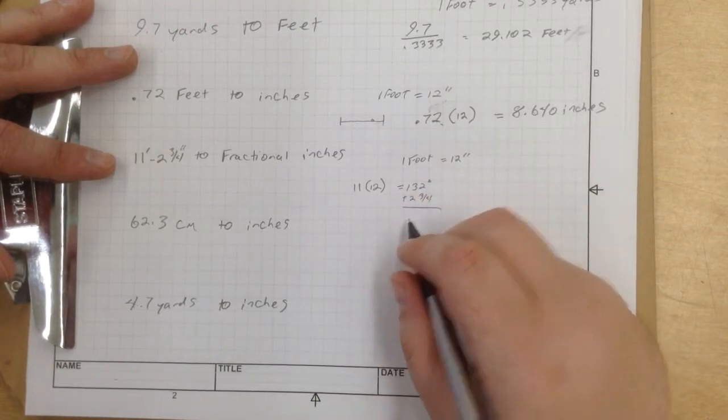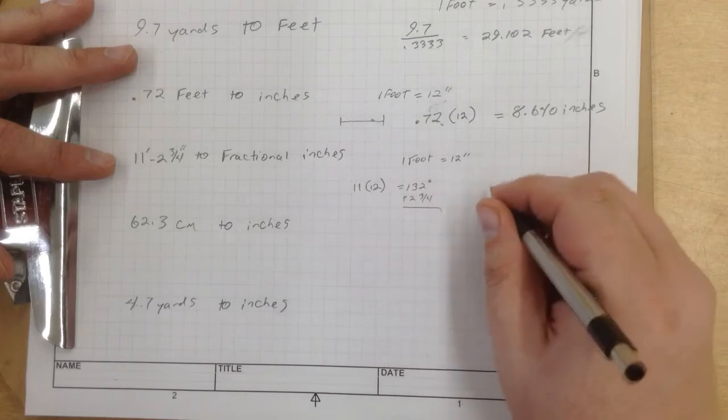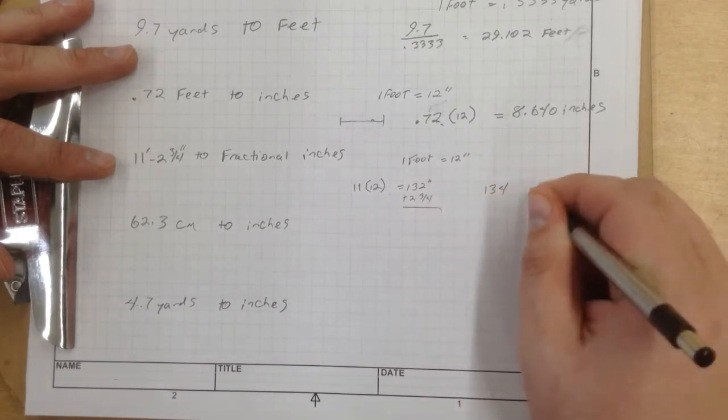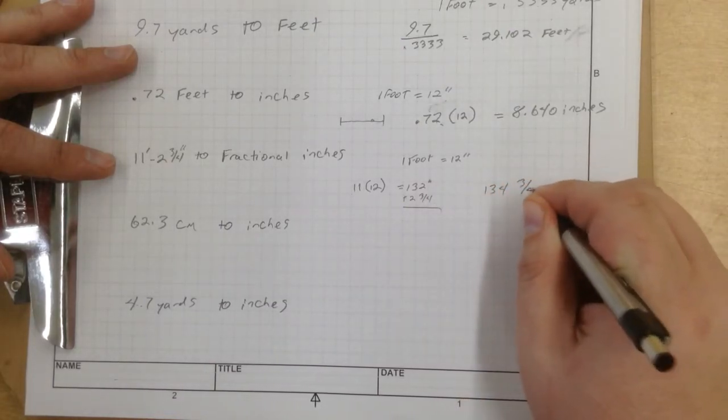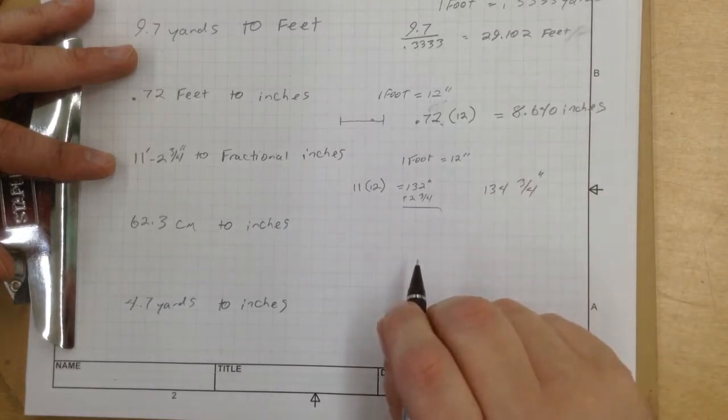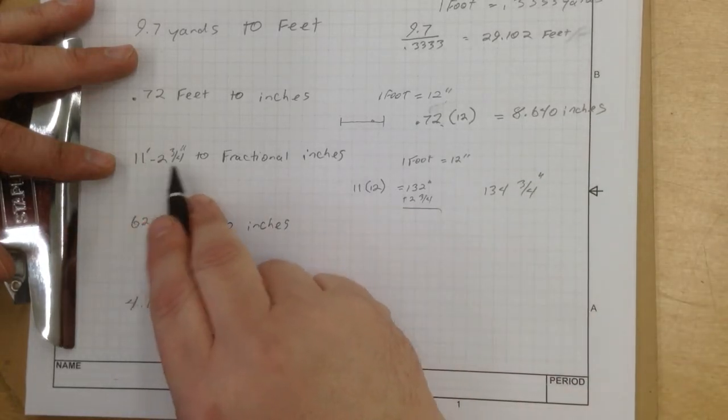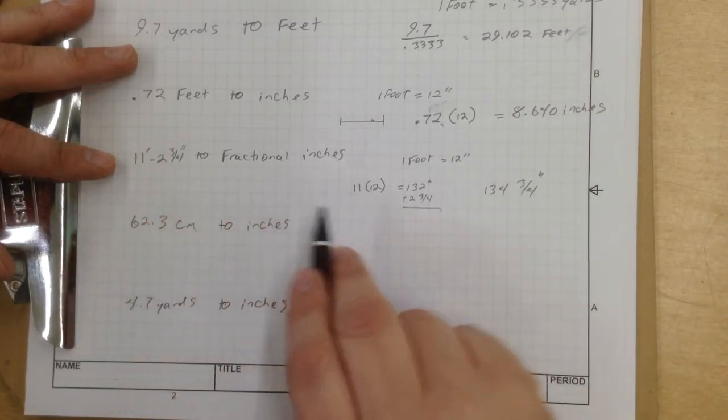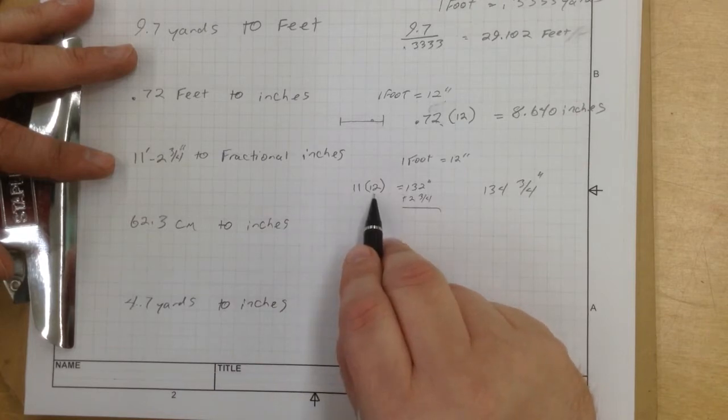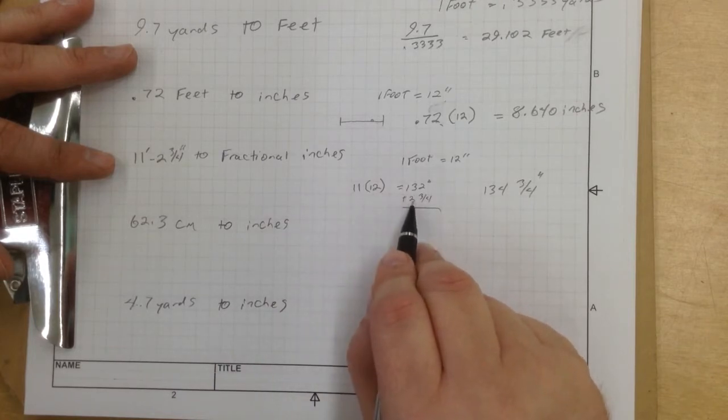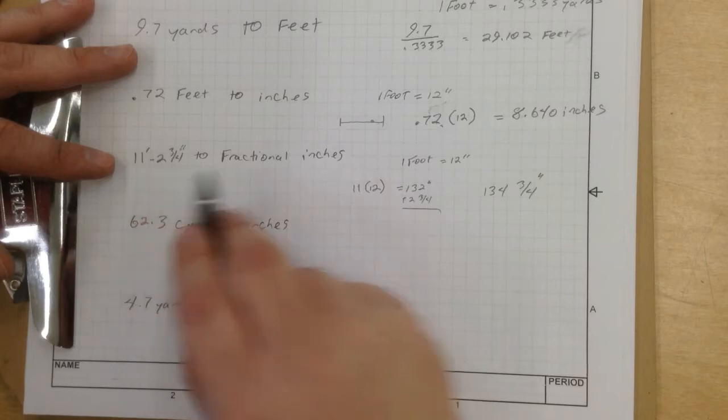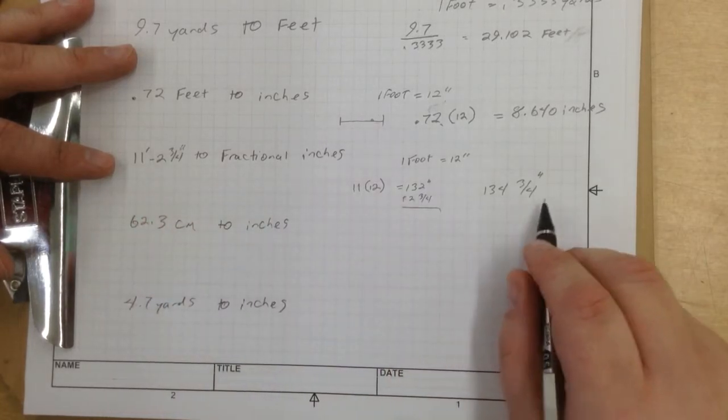So this is really simple. 132 plus 2 is 134 and 3 fourths inches. So when we convert 11 foot 2 3 quarters inches to fractional inches, 11 feet times 12 inches gives us 132 inches plus 2 3 quarter, that right there, 134 and 3 fourths.